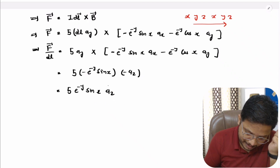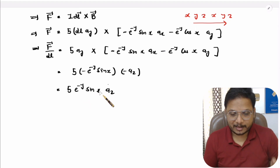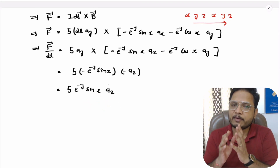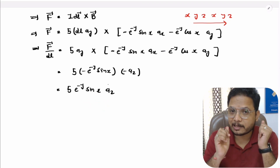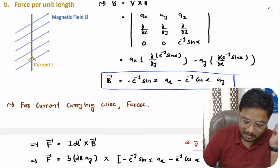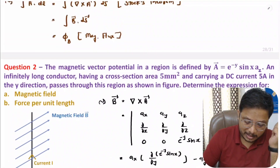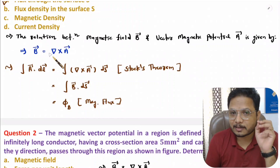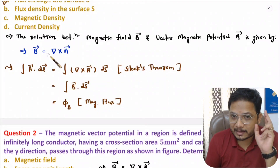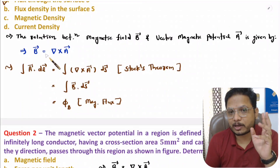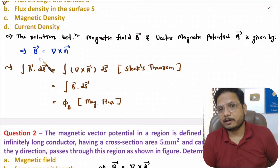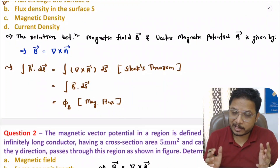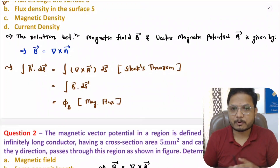I hope you now have a fair idea about vector magnetic potential. The key relation to remember is that magnetic field B equals del cross A, where A is the vector magnetic potential. If you have any questions, note them in the comment section — I'll be happy to help. Thank you so much for watching.